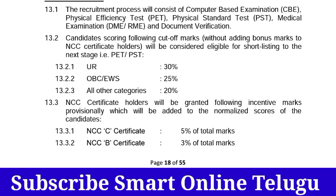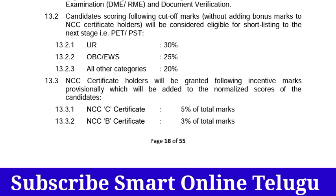For qualification relaxation: OBC and EWS candidates receive 25% and 20% relaxation respectively. NCC candidates receive a maximum relaxation, up to 80. NCC C certificate holders receive 5% additional relaxation.